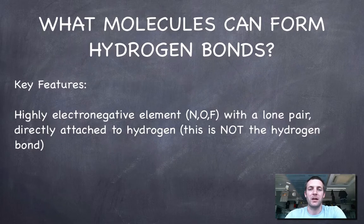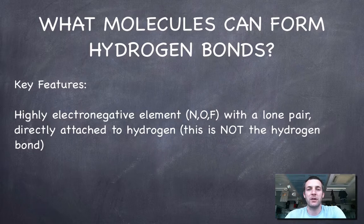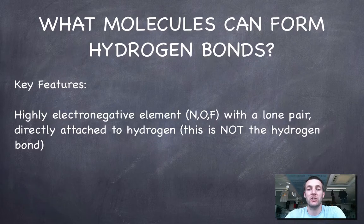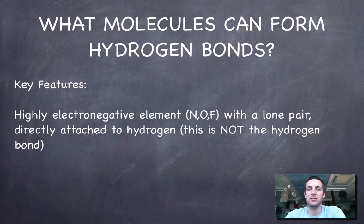So what molecules can actually form hydrogen bonds? You have to have a number of different features. First, you need a highly electronegative element — the three most electronegative elements in the periodic table: nitrogen, oxygen, and fluorine. In order to have a hydrogen bond between molecules, there has to be a nitrogen, oxygen, or fluorine in the molecule. That element must have a lone pair and must be directly attached to hydrogen.